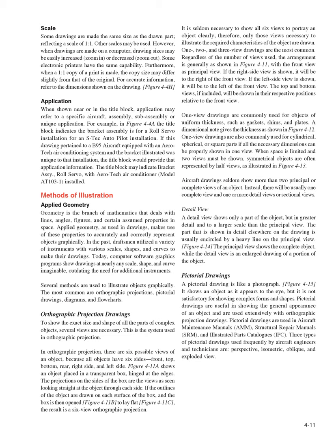A detail view shows only a part of the object, but in greater detail and to a larger scale than the principal view. The part shown in detail is usually encircled by a heavy line on the principal view. The principal view shows the complete object, while the detail view is an enlarged drawing of a portion of that object. A pictorial drawing is like a photograph — it shows an object as it appears to the eye, but is not satisfactory for showing complex forms and shapes. Pictorial drawings are useful in showing the general appearance of an object and are used extensively with orthographic projection drawings.